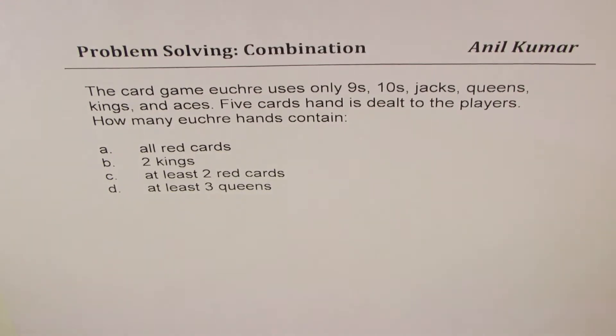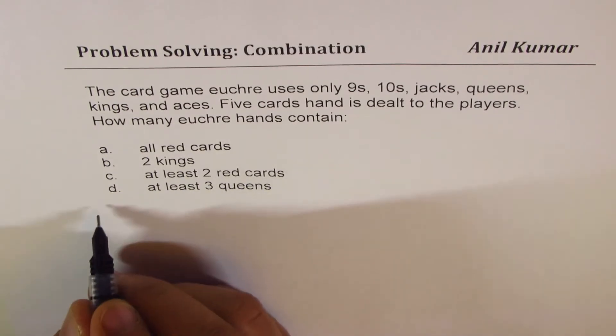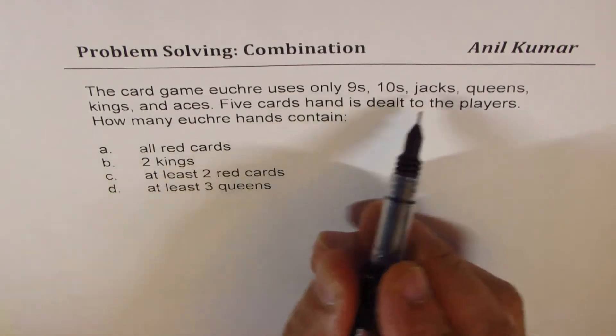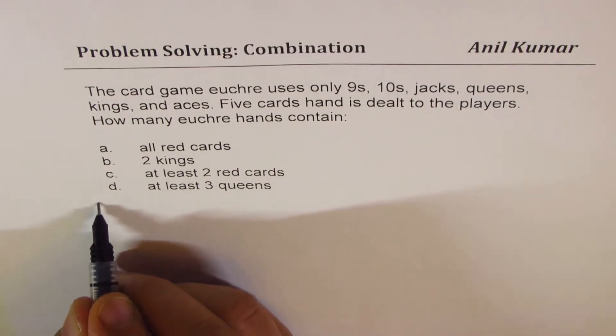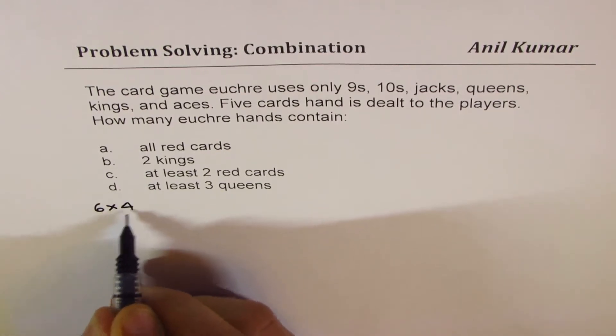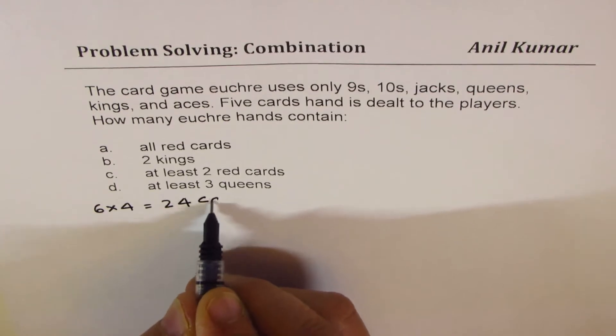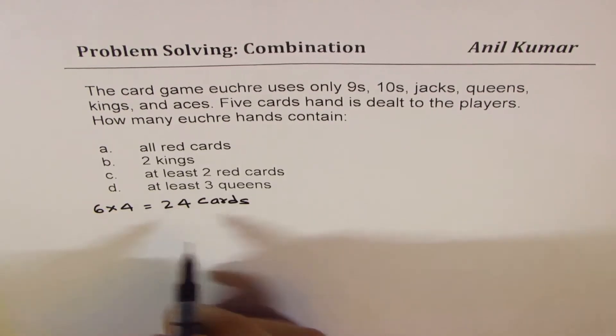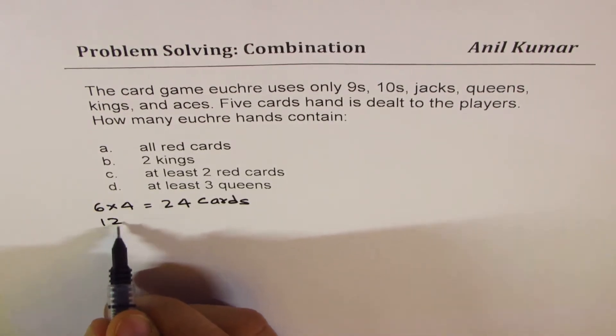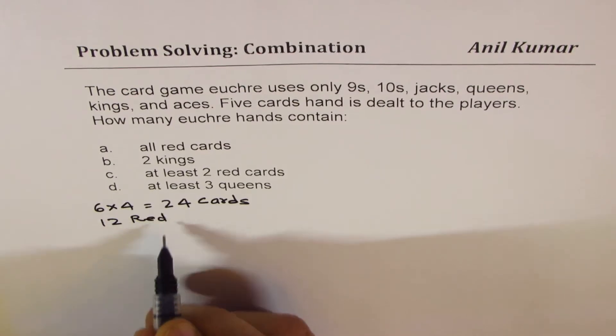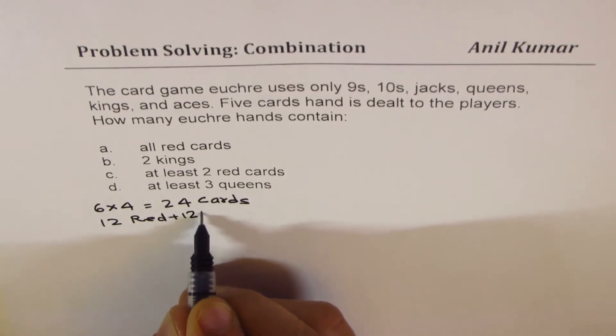So what we understand here is that in all, we have six cards. So we have six times four. Four are suits, so that is 24 cards. So out of 24 cards,